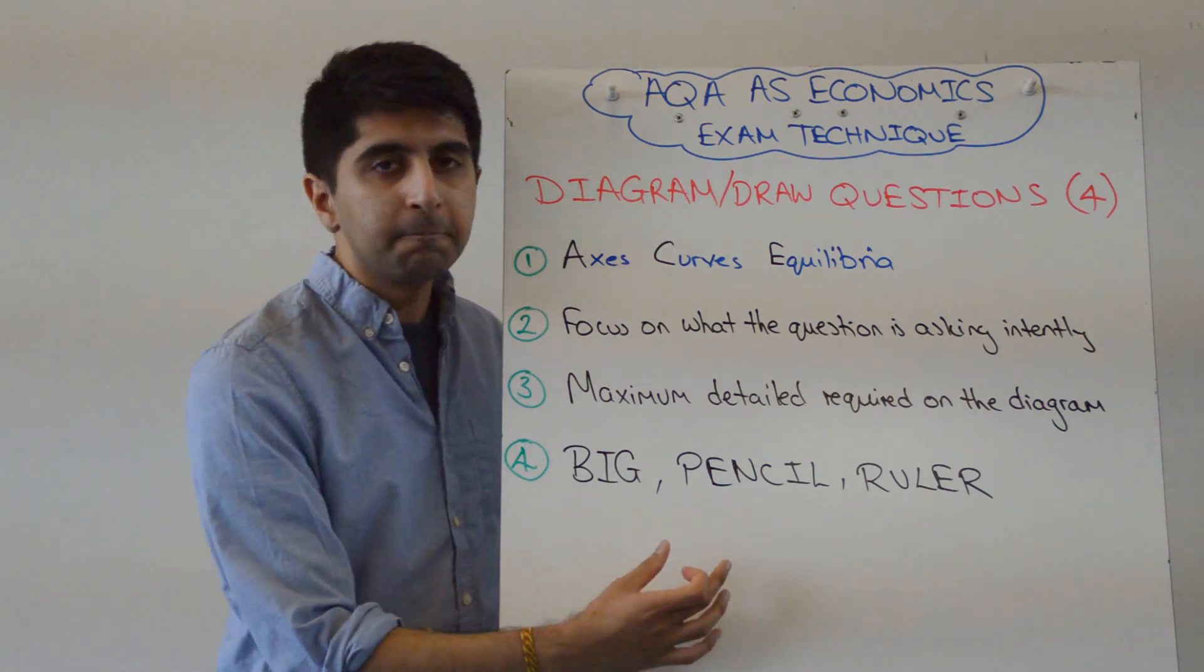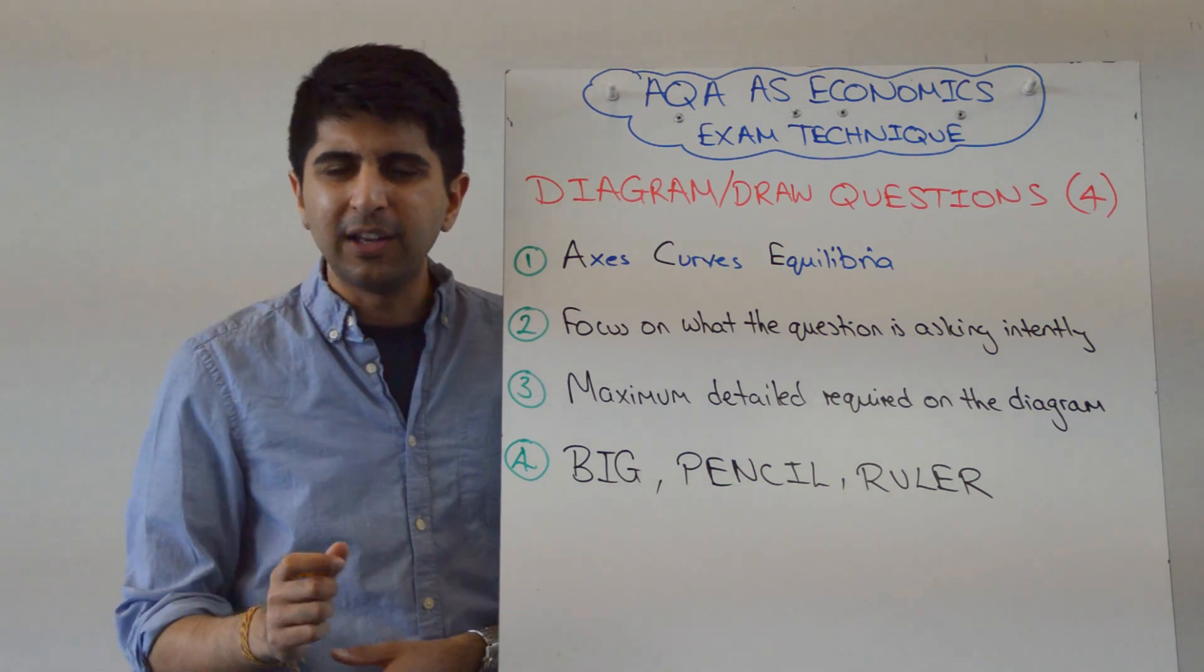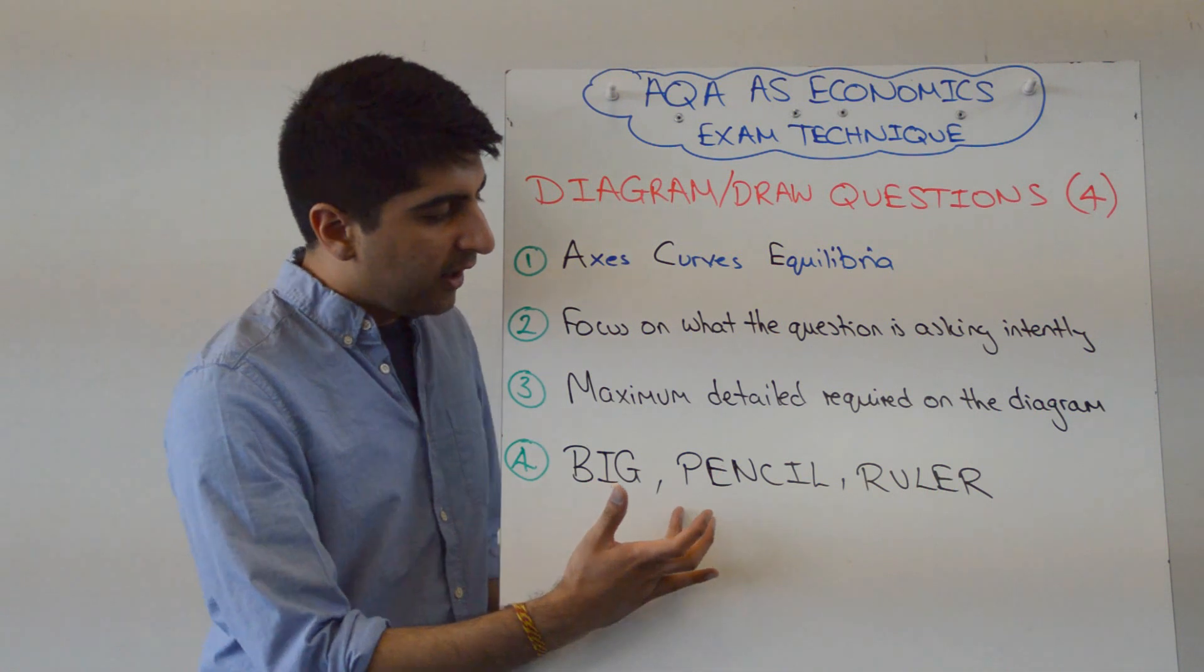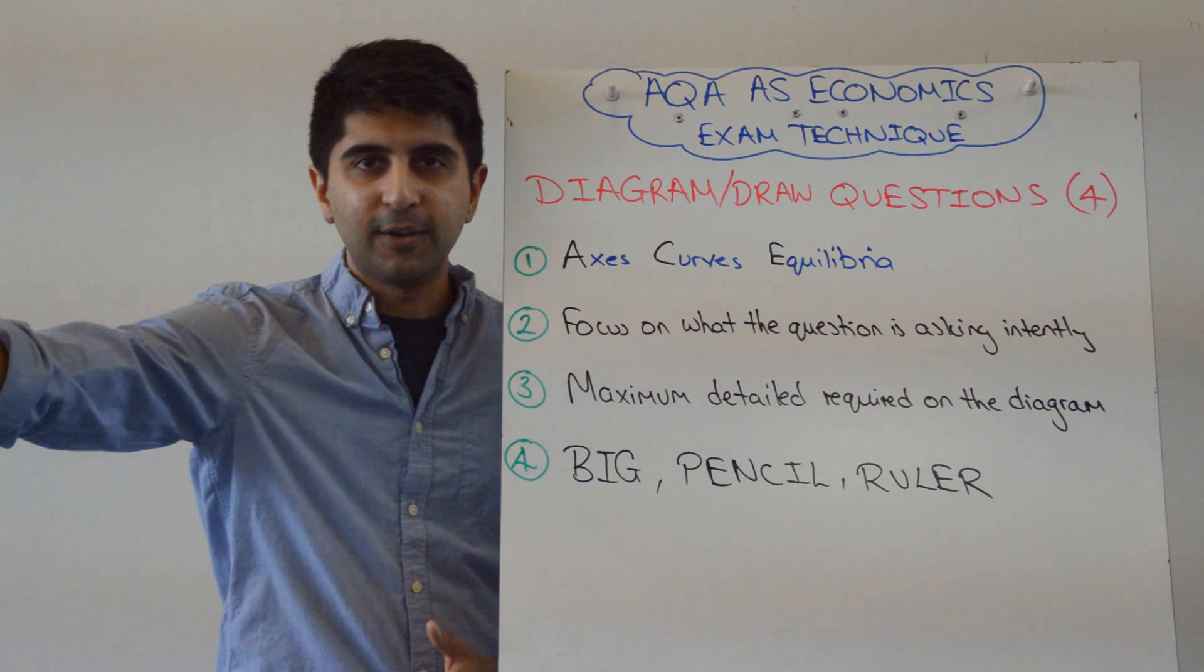It's very easy to make mistakes, hence why a pencil is important. The worst thing would be for you to start scribbling things out, looking terrible. And use a ruler again to aid with presentation. You're not going to lose marks if you don't do this, but examiners like it. I've heard it from chief examiners.